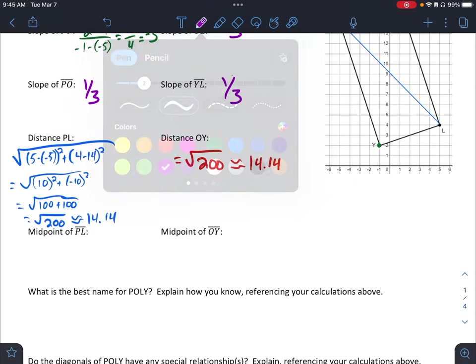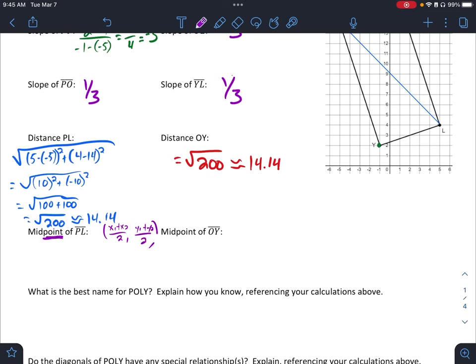And then lastly, midpoint. Our midpoint formula is, I'm going to write it here small, x1 plus x2 over 2, y1 plus y2 over 2. And I always remember this because I should be getting a point. So if I find the midpoint of PL, I'm going negative five plus 5 over 2, 14 plus 4 over 2, or 0 over 2, and 18 over 2, which gets me 0, 9 as our midpoint here.